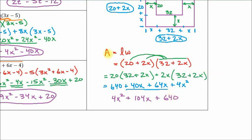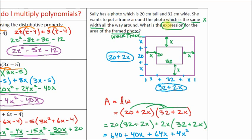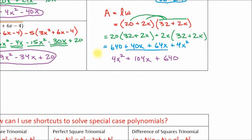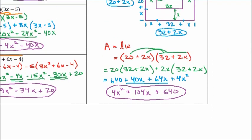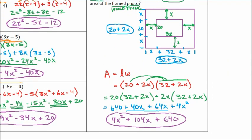You might have the temptation to write 'A equals' this, but here's the problem — it asks you for the expression, not the equation for the area of the frame. If they ask you for the equation, your final answer would be A equals 4x squared plus 104x plus 640, because that's an equation with an equal sign. They want the expression. An expression is a math sentence but it doesn't have an equal sign. So the expression for the area of this frame and photo combined is 4x squared plus 104x plus 640.